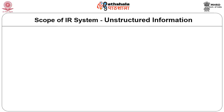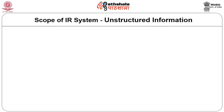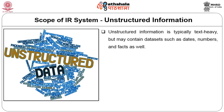Unstructured information either does not have a predefined data model or is not organized in a predefined order. It is typically text-heavy, but may also contain data such as dates, numbers and facts. Because of its unstructured nature, it results in irregularities and ambiguities that make it difficult to understand using traditional computer programs, as compared to data stored in fielded forms such as databases or data that is annotated or semantically tagged. Whenever there is some kind of structure and annotation, it gives a lot of information to the IRS system to semantically retrieve information or to exploit the structure itself.